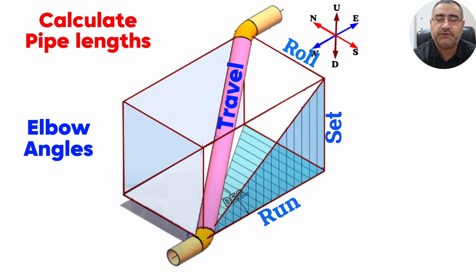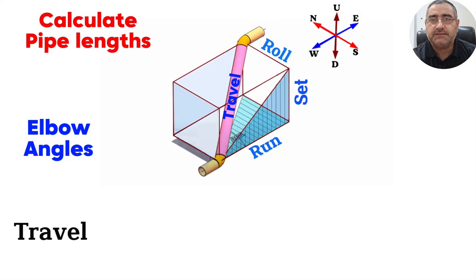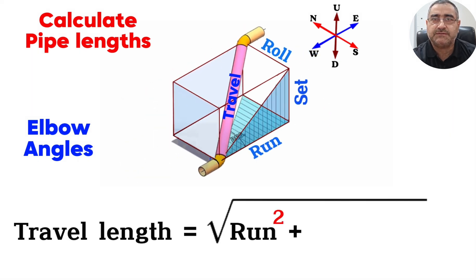In such cases, the following formula is used to calculate the pipe section length. Travel length equals the square root of run squared plus set squared plus roll squared. This formula comes from the Pythagorean theorem in three dimensions, where the run, set, and roll represent the pipeline's movement along the eastward, upward, and northward directions, respectively.